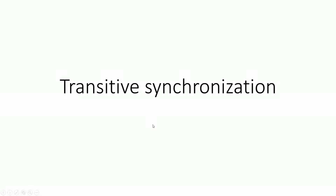In this video, we are going to discuss a special property of synchronization called transitiveness. Because of this property, we can synchronize two threads without having any direct release and acquire ordering mechanism. To demonstrate this property, we need at least three threads.